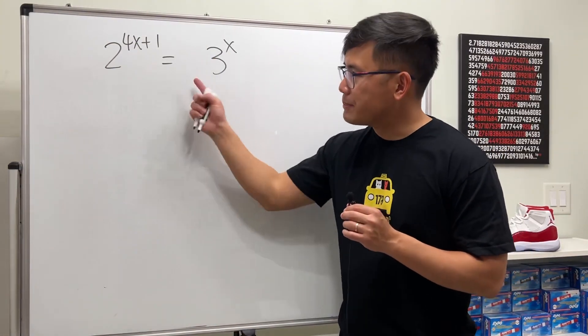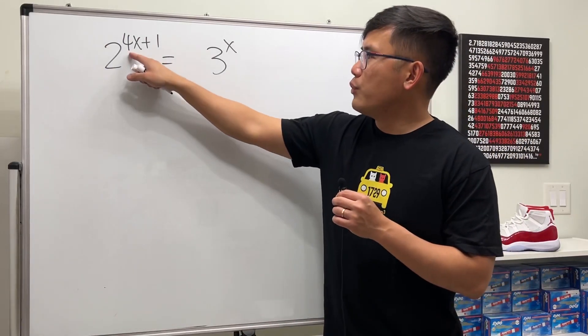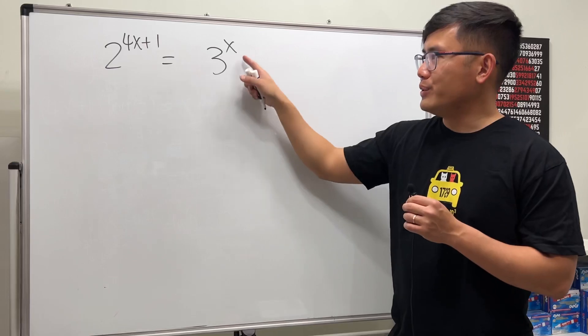Let me show you how we can solve an exponential equation that has two different bases. Here we have 2 to the 4x plus 1, and that's equal to 3 to the x.